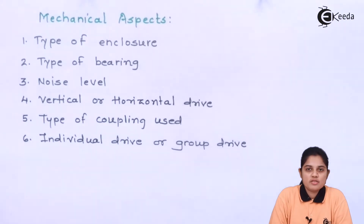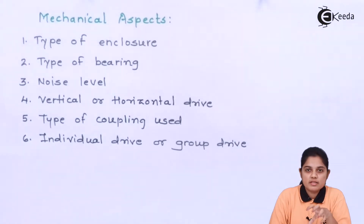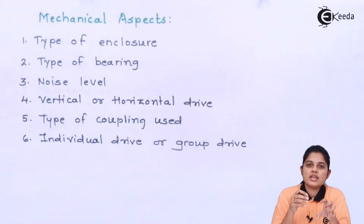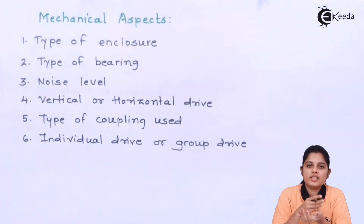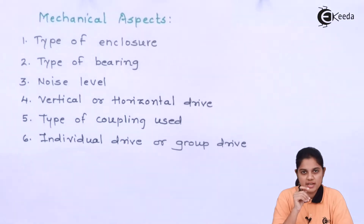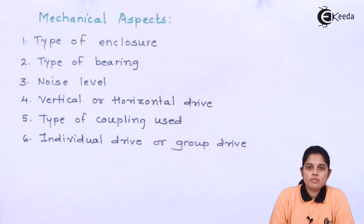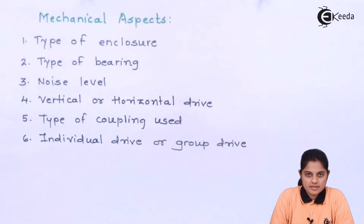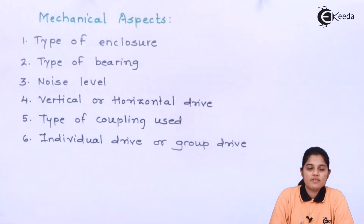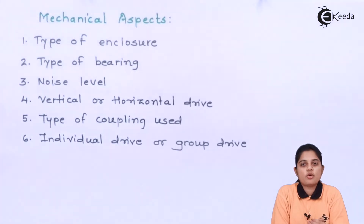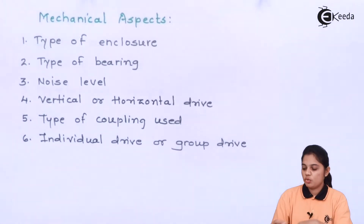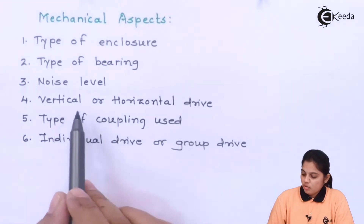The second mechanical aspect is the type of bearing. For high power applications, ball bearings are commonly used. Bearings are used to decrease noise level and reduce friction caused by the rotation of the motor. For example, in vehicles like cars or bikes, bearings reduce friction and noise. Noise level is especially important when motors are used in medical appliances, hospitals, or theaters, where noise must be minimized. Bearing selection is therefore a very important part of controlling the noise level.